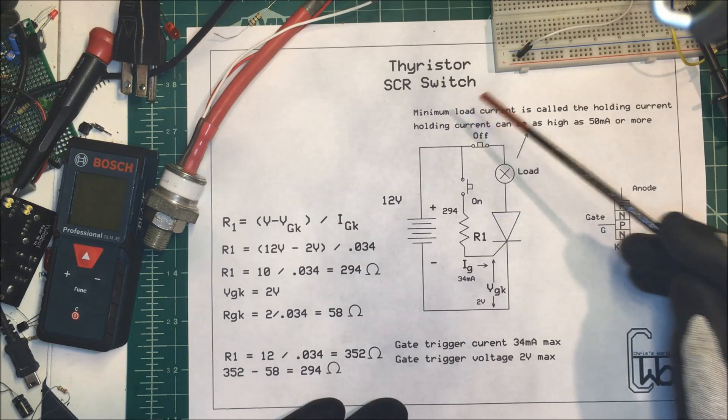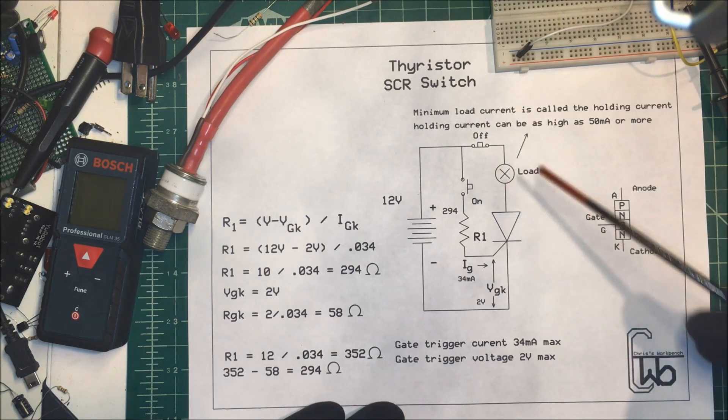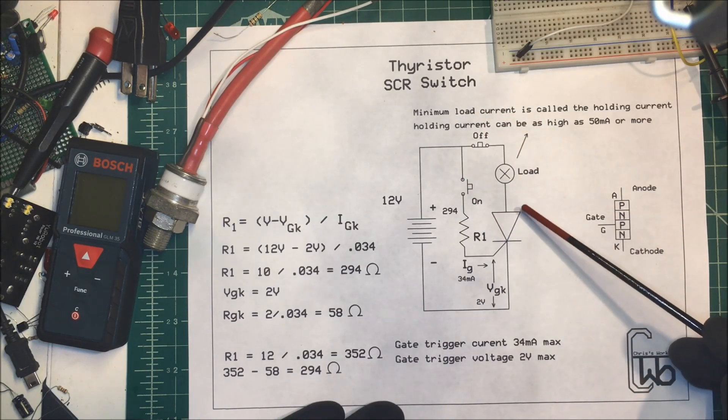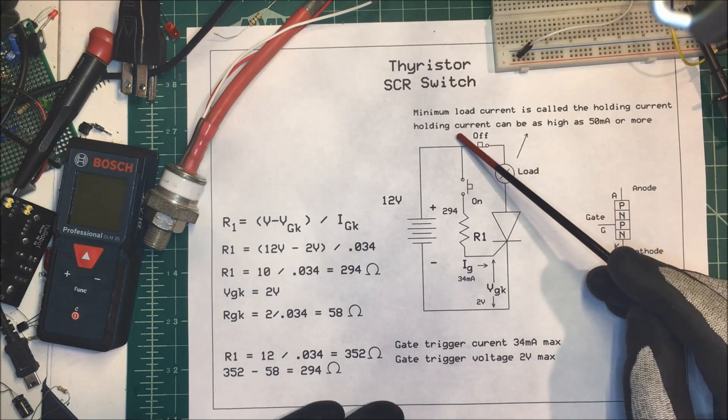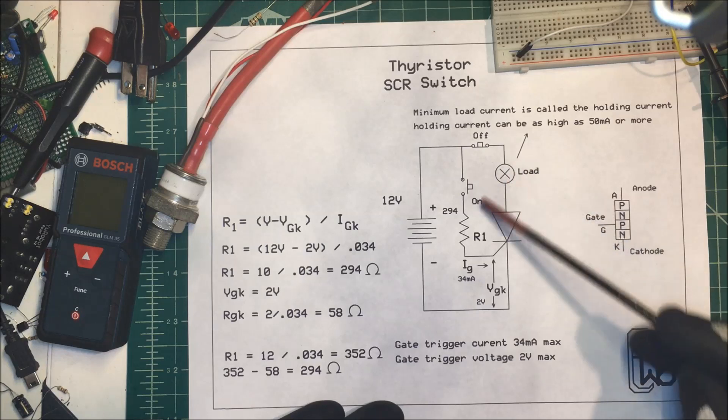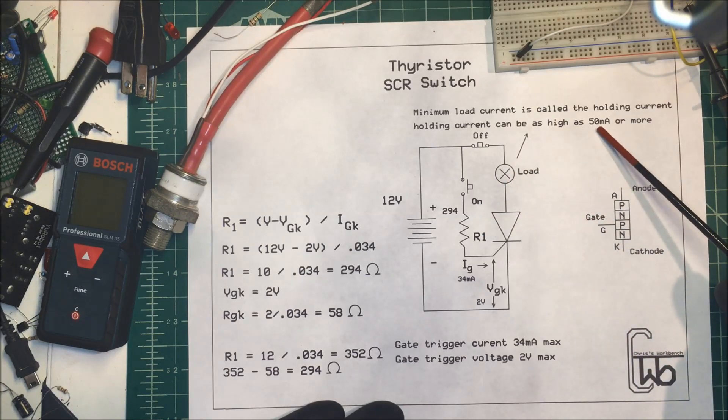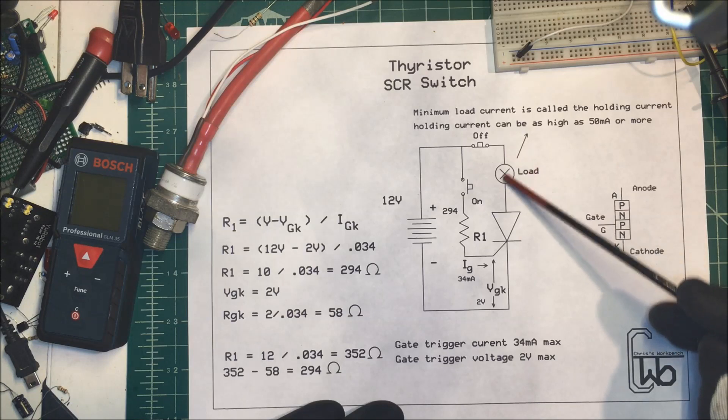Let's talk about an SCR. We use it as a switch. Now these SCRs, there's a minimum load current and it's called the holding current. For this particular one it's a little bit over 50 milliamps.